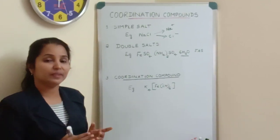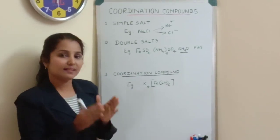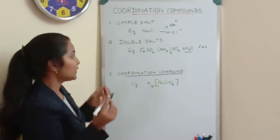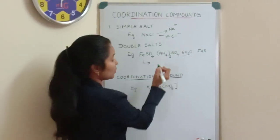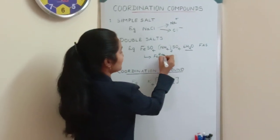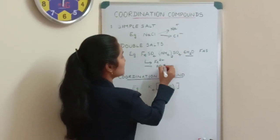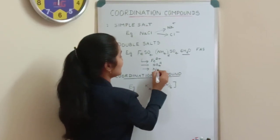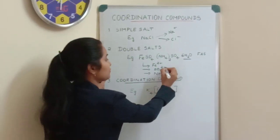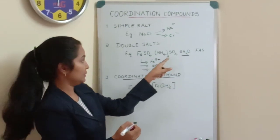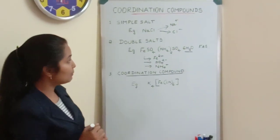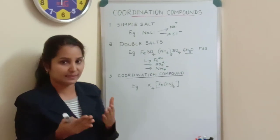This double salt, since it is the combination of two simple salts, when dissolved in water, will also get completely dissociated into its constituent ions. When Mohr's salt is dissolved in water, you will get Fe²⁺ ions from FeSO₄, SO₄²⁻ ions from FeSO₄ and (NH₄)₂SO₄, and NH₄⁺ ions from ammonium sulphate. So double salts get completely dissociated into their constituent ions when dissolved in water.